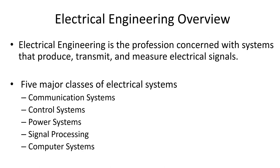These systems can be broken down into five classes: communication systems, control systems, power systems, signal processing, and computer systems.